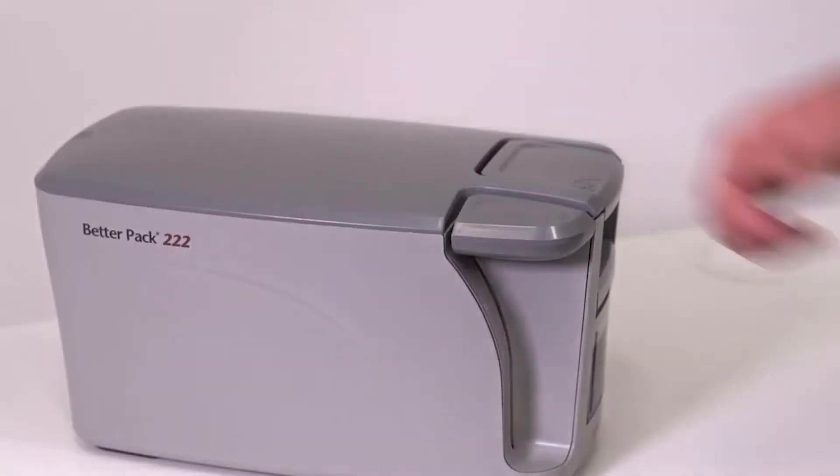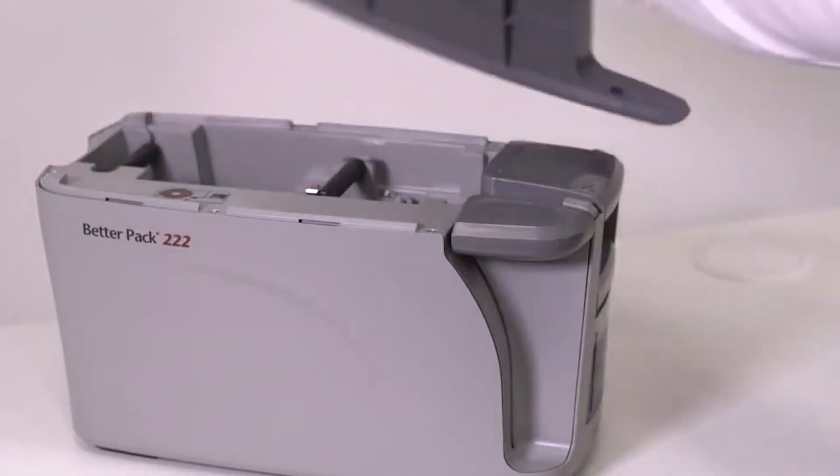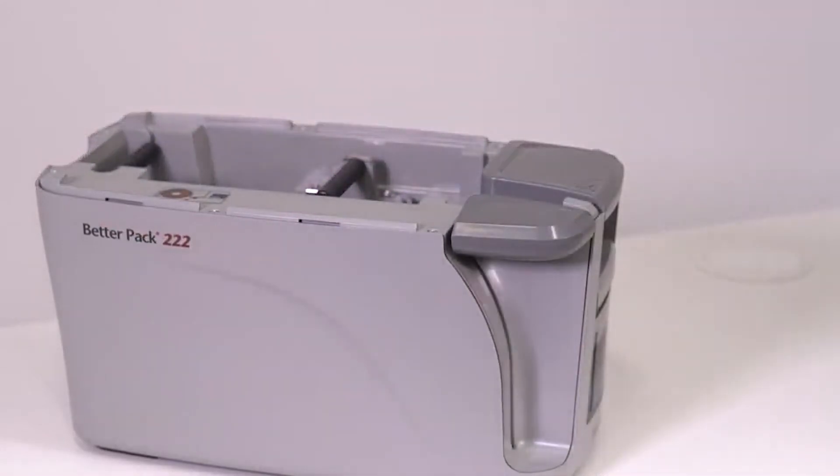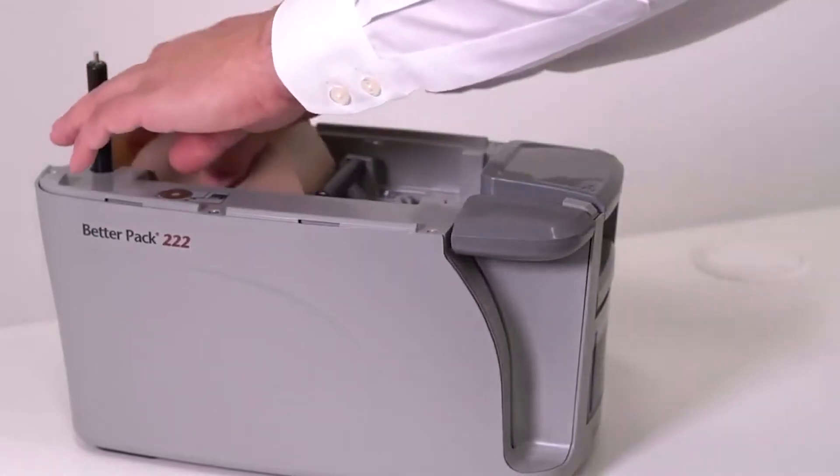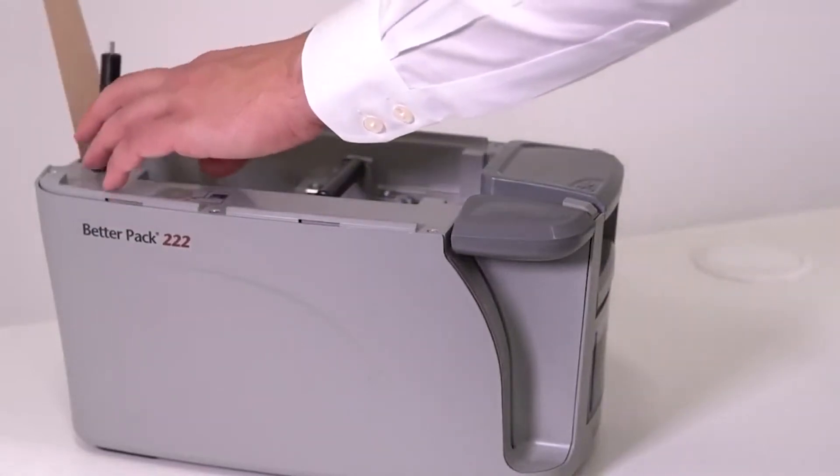To load the tape, firstly remove the lid, take the roll of tape, lift up the rear roller, put the roll of tape in and lower the rear roller down.